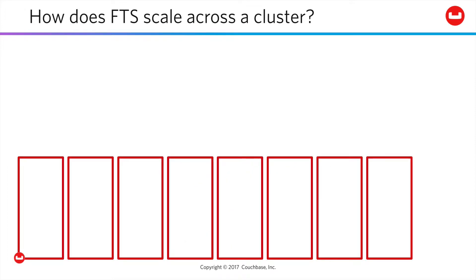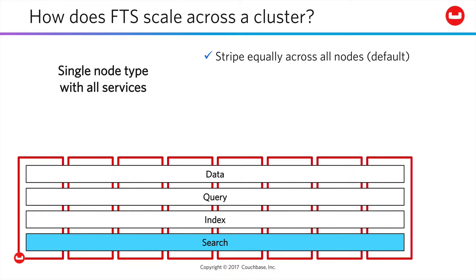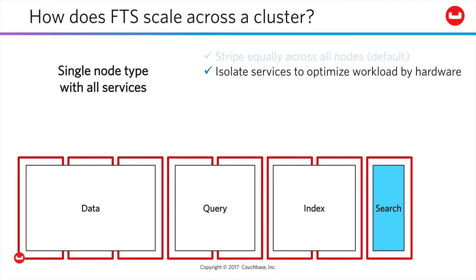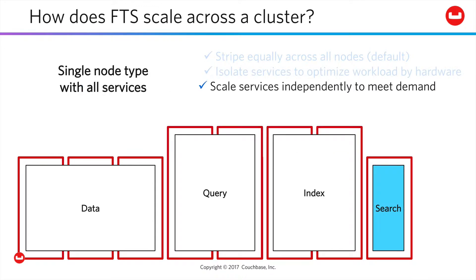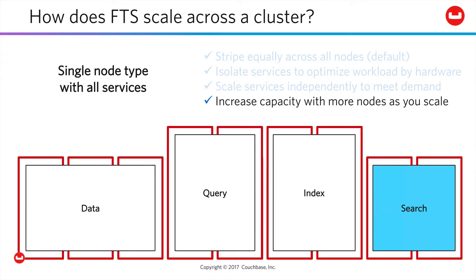Couchbase likes to keep your data centers simple. We're based on a single node type to make all services available, but services can be scaled and isolated independently. You can stripe everything equally across all nodes — the default for small clusters — but as you grow, you can isolate services to optimize hardware requirements and scale services independently to meet changing application demands, adding nodes tuned for services that require increased capacity. In short, you get both maximum simplicity and maximum control.